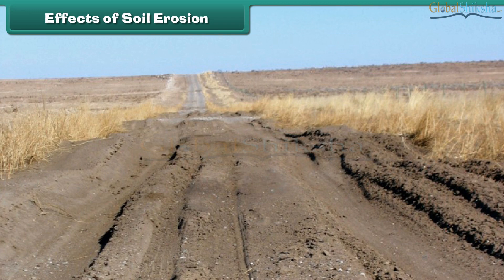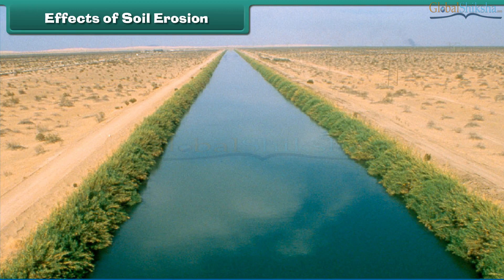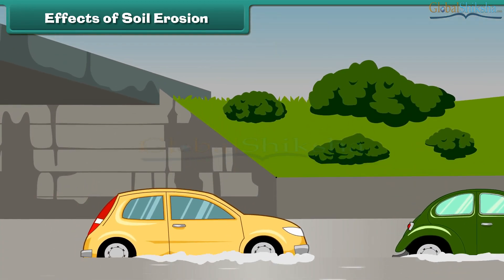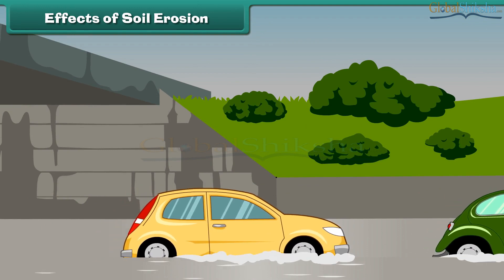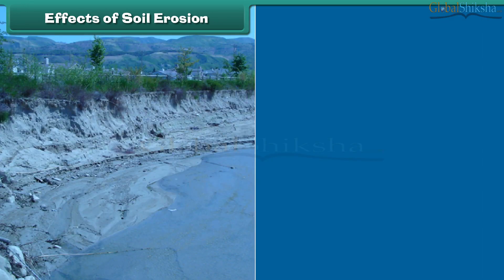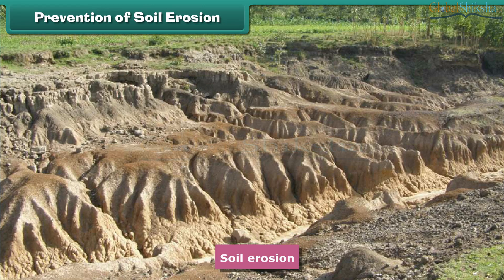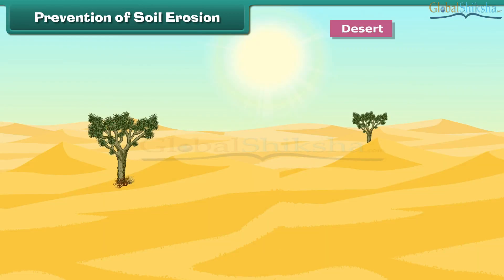Soil erosion affects natural vegetation badly, which leads to the transfer of fertile land into desert. Due to soil erosion, the soil shifts and accumulates on roads and streets, blocking driving and resulting in accidents. It also blocks irrigation canals and increases the risk of flooding. The eroded soil deposits in water resources like rivers and lakes, polluting them.